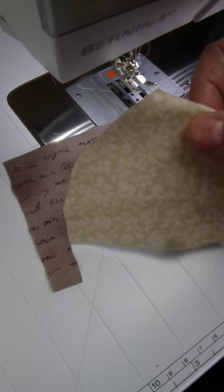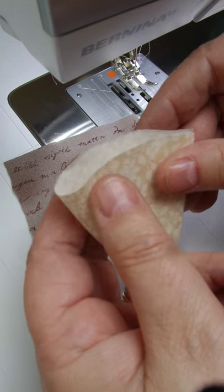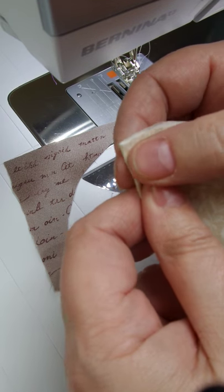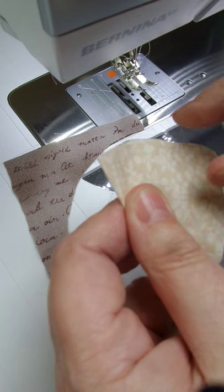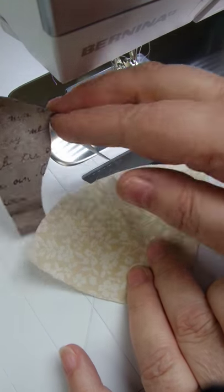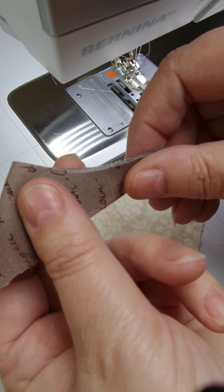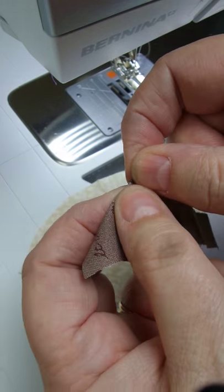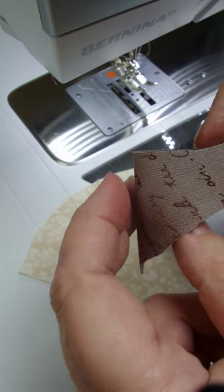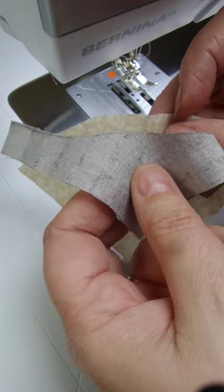In the book it says fold that one in half to crease, put a crease line there in the middle, and do the same with the outer piece. Then you're going to put them right sides together, crease to crease.